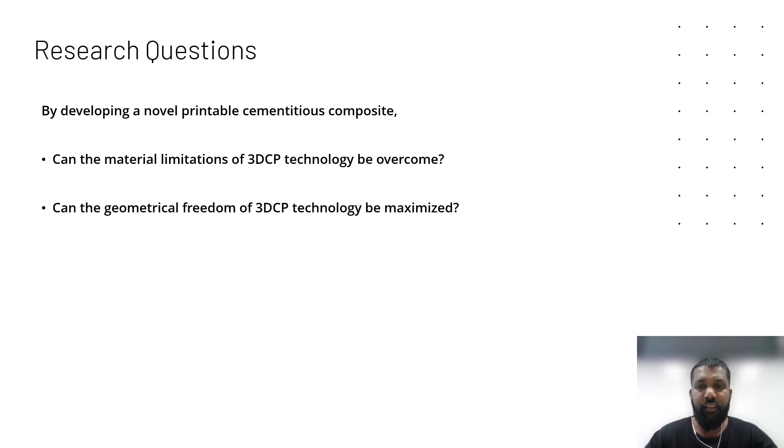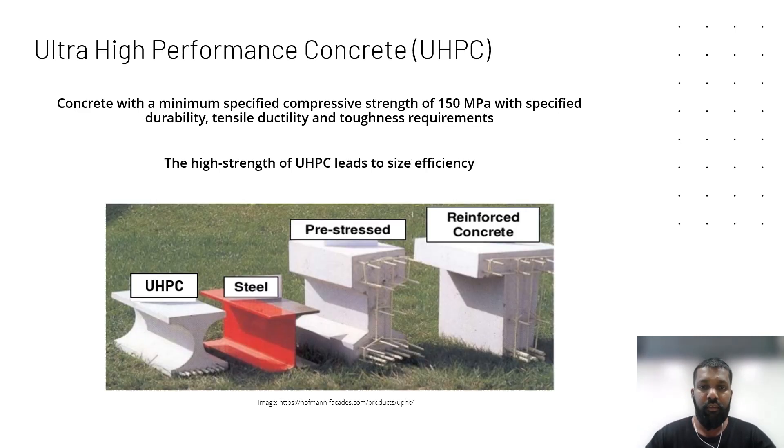We looked at ultra high performance concrete, or we can call it UHPC. This was developed in the mid-1990s with a compressive strength of 150 MPa or above, and is about three to four times the normal strength of concrete. Ultra high performance concrete also has high durability and tensile toughness.